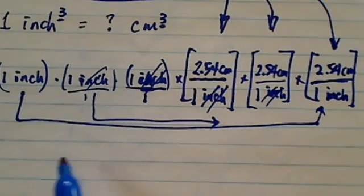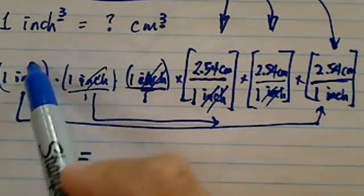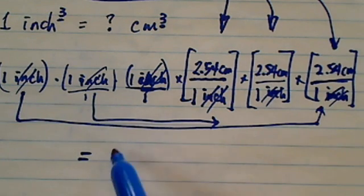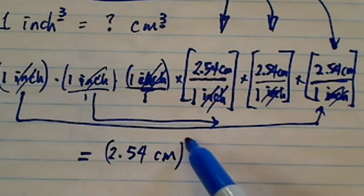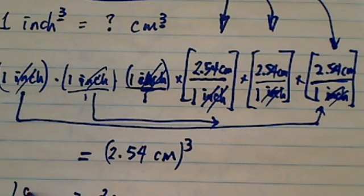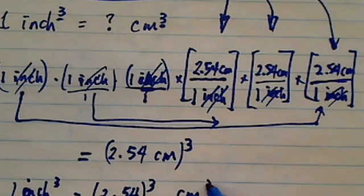From here, I'm going to have equal sign because all my inches are gone, right? I have 2.54 centimeters three times. So basically, the answer is one inch cubed is equal to 2.54 cubed centimeter cubed.